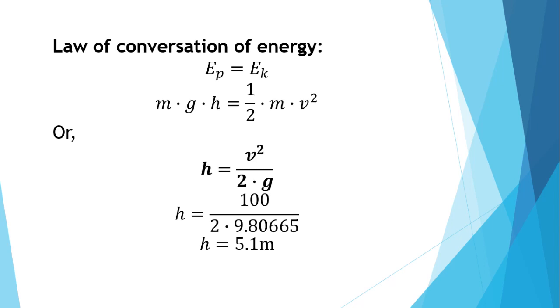Or h equals v squared over 2 times g. And we substitute all the given data, h equals 100 over 2 times 9.80665 and the result for h or height is 5.1 meters.